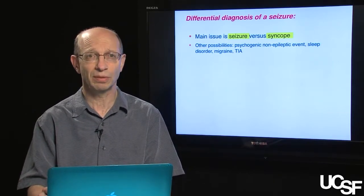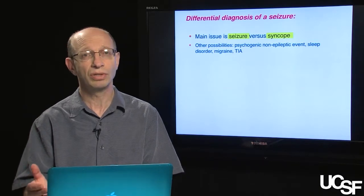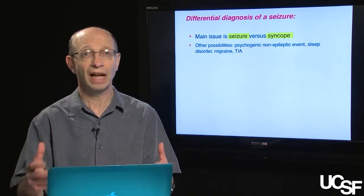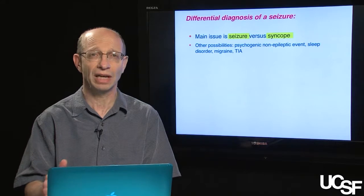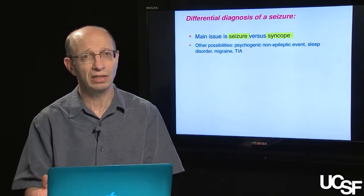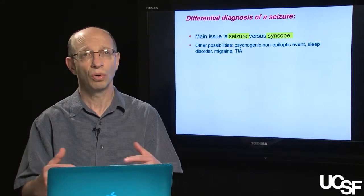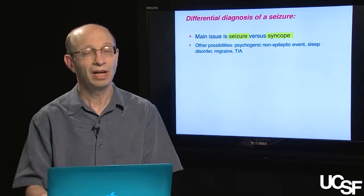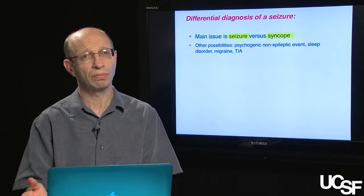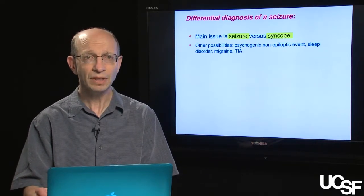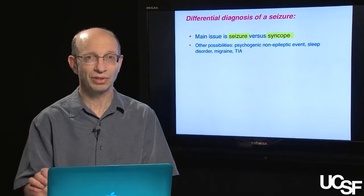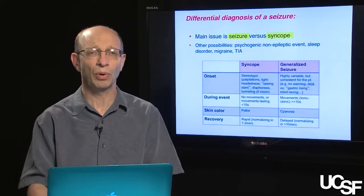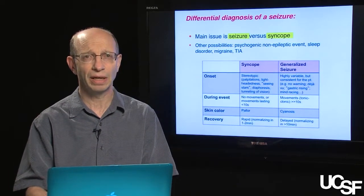Other possibilities that can explain an apparent loss of consciousness include psychogenic non-epileptic events — patients who have everything that looks like a seizure but from a psychological or psychiatric basis — as well as various sleep disorders that can cause a sudden loss of tone or consciousness, migraine with unusual manifestations, and transient ischemic attacks. But again, the main differential diagnosis is seizure versus syncope, and this table elucidates the important distinguishing features between them.